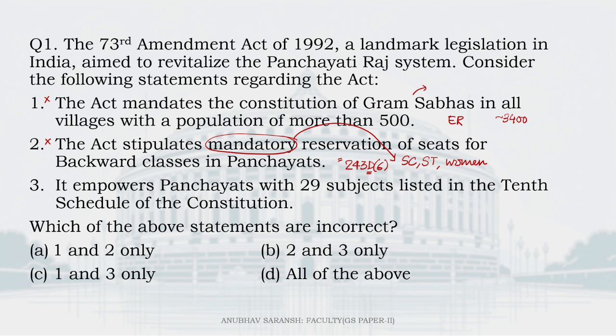Statement three: It imparts Panchayats with 29 subjects listed in the 10th schedule of the Constitution. The 29 subjects on which Panchayats can be imparted are listed in the 11th schedule, not the 10th schedule. Why? Because the 10th schedule contains provisions for the anti-defection law. There are 29 functional items like agriculture, land improvement, family welfare, etc., on which Panchayats can be empowered if the state legislature by law decides. So, statement three is also wrong.